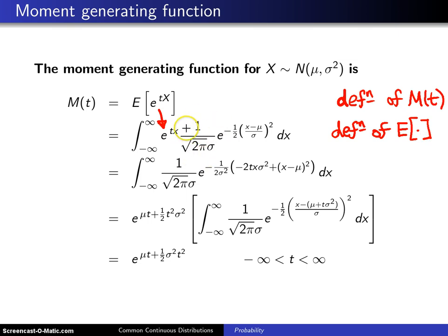The constant 1 over the square root of 2 pi sigma is brought out front. Notice we have e raised to one power and e raised to another power. We can bring the 1 over 2 sigma squared out front in the exponent.